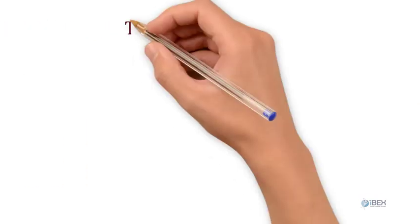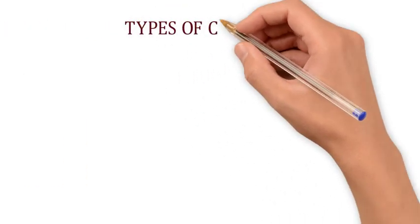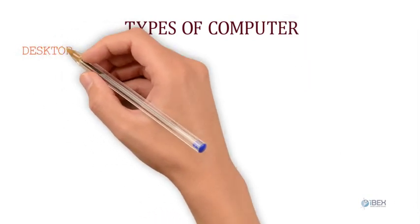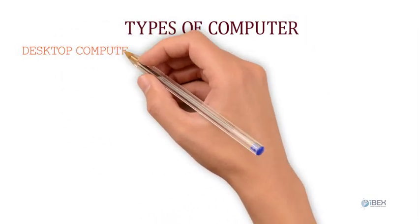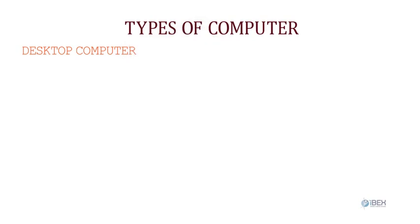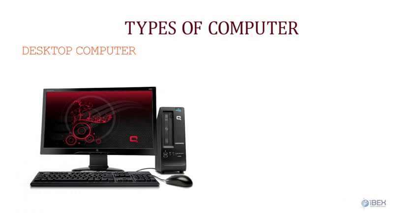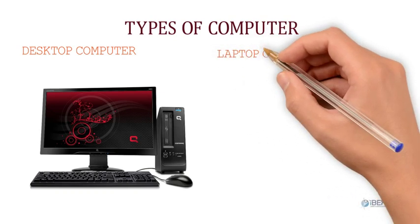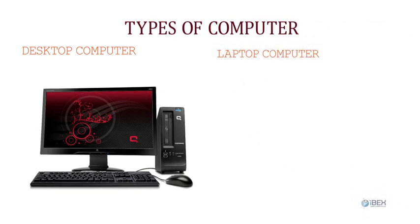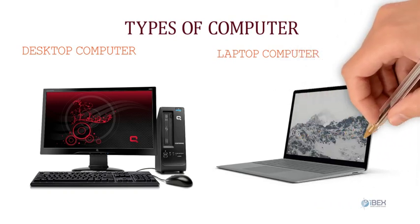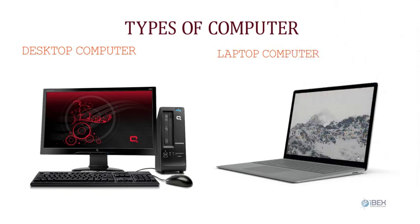A computer can be termed as an electronic device used to store and process information. Types of computer: Desktop computers are the normal computers you run at home, made up of components like monitor, keyboard, mouse, system unit, printer, camera, etc. Laptop computers are lightweight and condensed forms of desktop computers — smaller in size but containing all features of a desktop computer within their small frame.